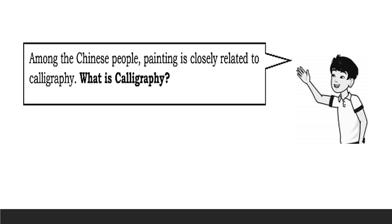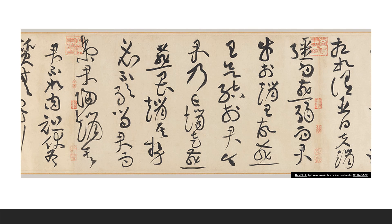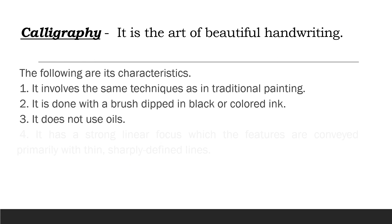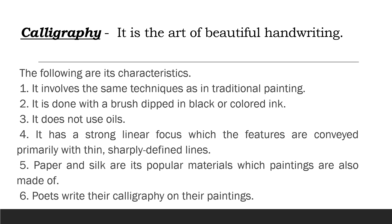Calligraphy is the art of beautiful handwriting. The following are its characteristics: 1. It involves the same techniques as traditional painting. 2. It is done with a brush dipped in black or colored ink. 3. It does not use oils. 4. It has a strong line of focus, where features are conveyed primarily with thin, sharply defined lines. 5. Paper and silk are its popular materials, which paintings are also made of. 6. Poets write their calligraphy on their paintings.